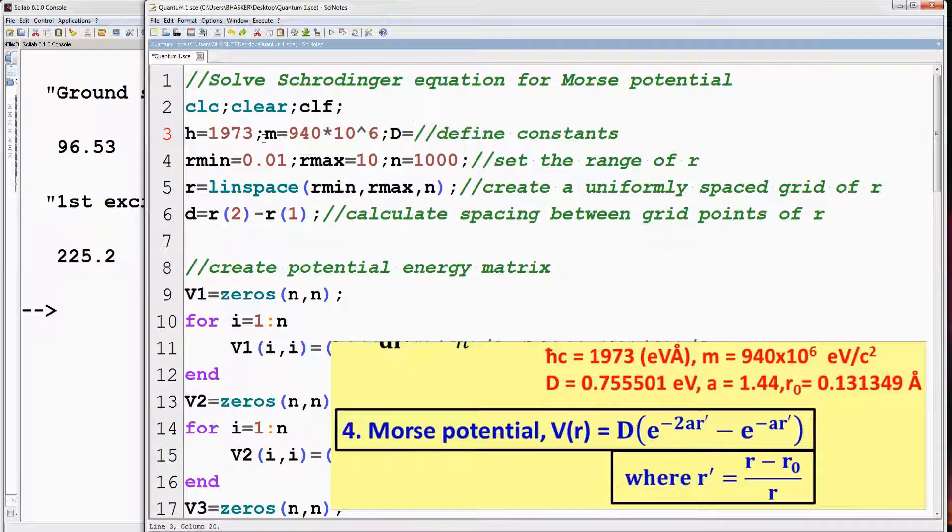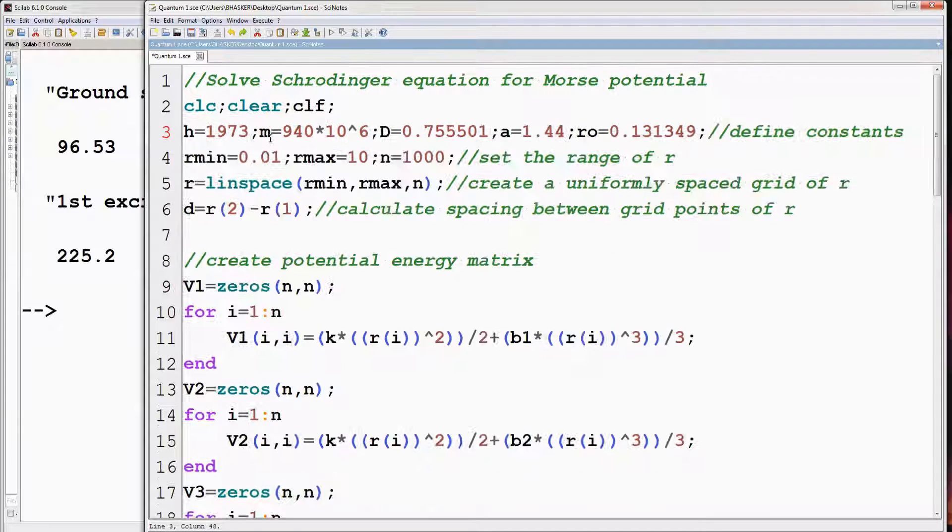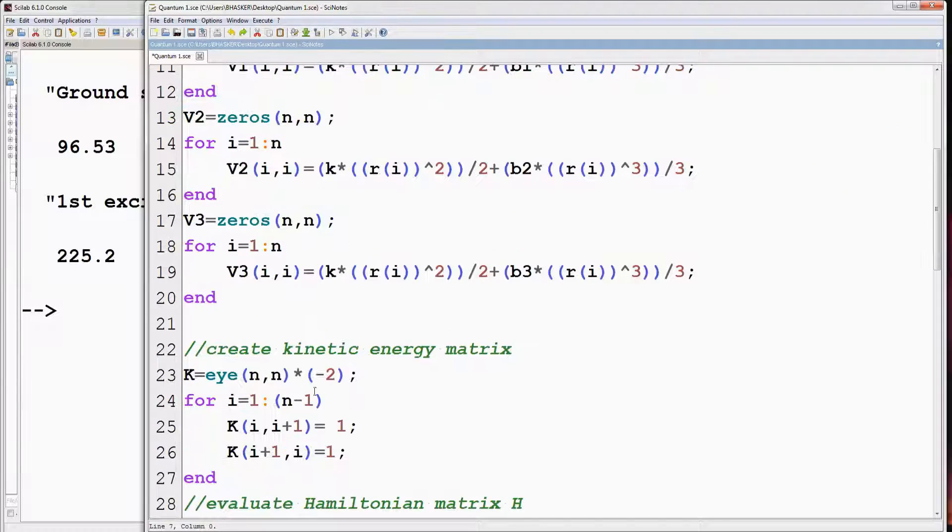Here we don't need to vary the constants d, r0 or A. So we need only one expression for potential and Hamiltonian matrix. So remove the extra two expressions everywhere.